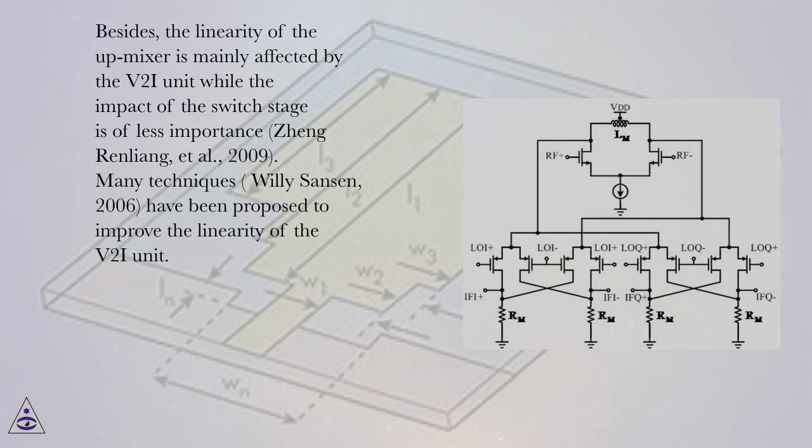Besides, the linearity of the up-mixer is mainly affected by the V2I unit while the impact of the switch stage is of less importance, Jung-Rin Liang, et al., 2009. Many techniques, Willie Sanson, 2006, have been proposed to improve the linearity of the V2I unit.